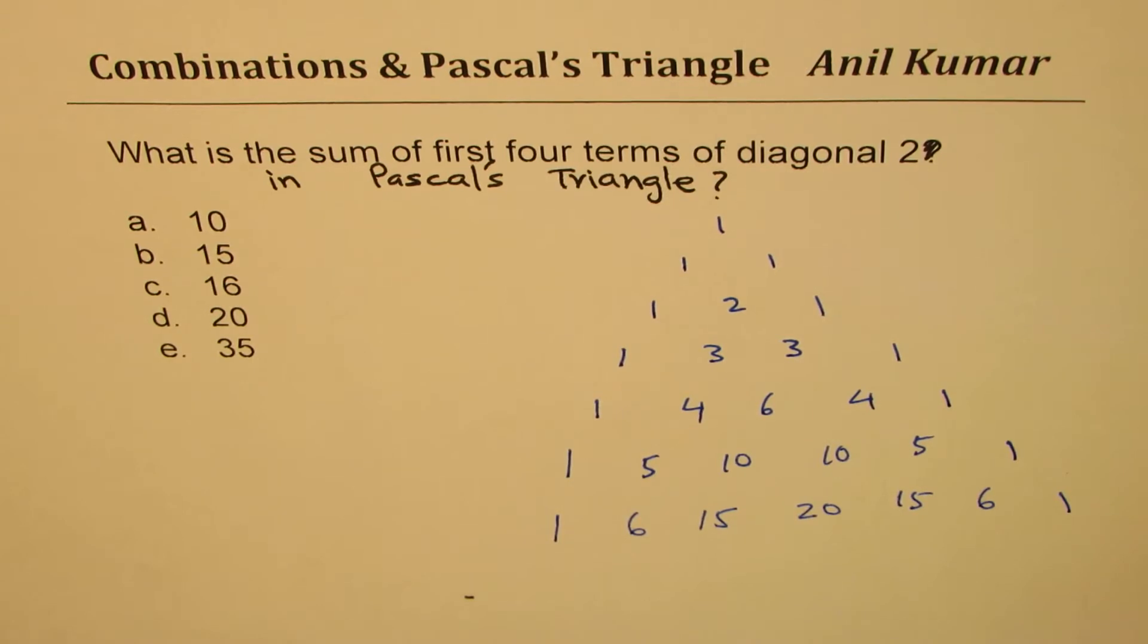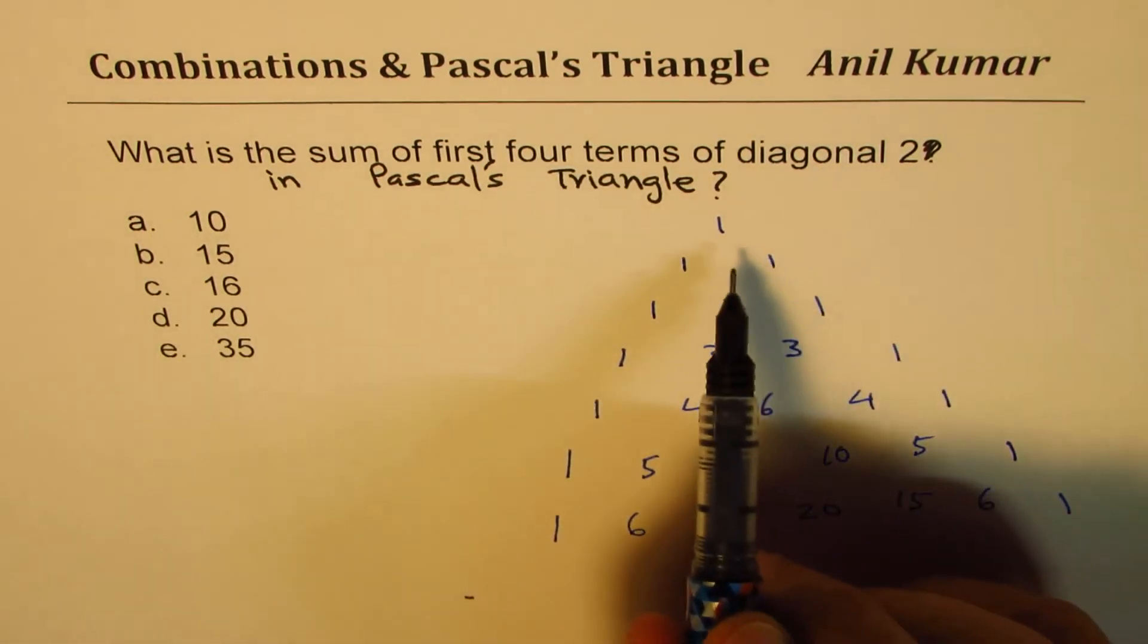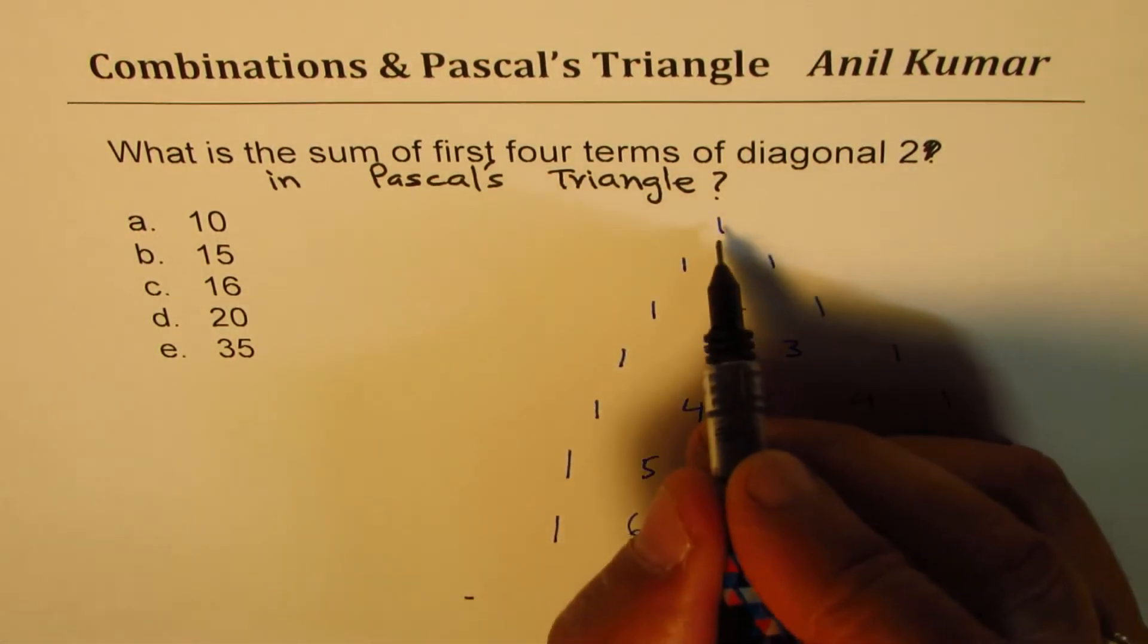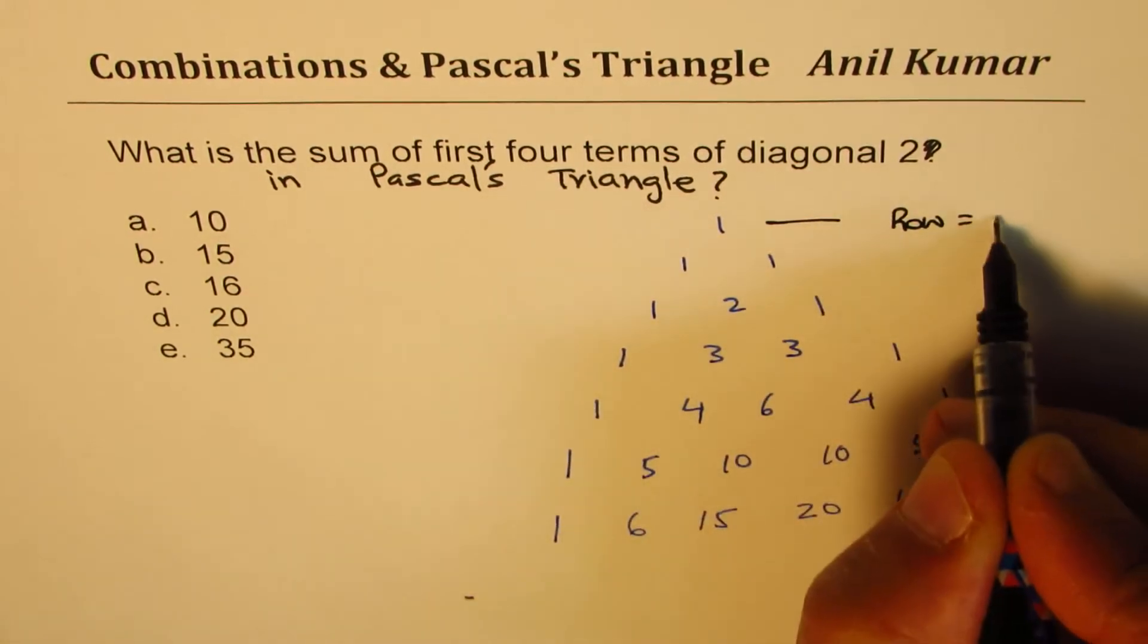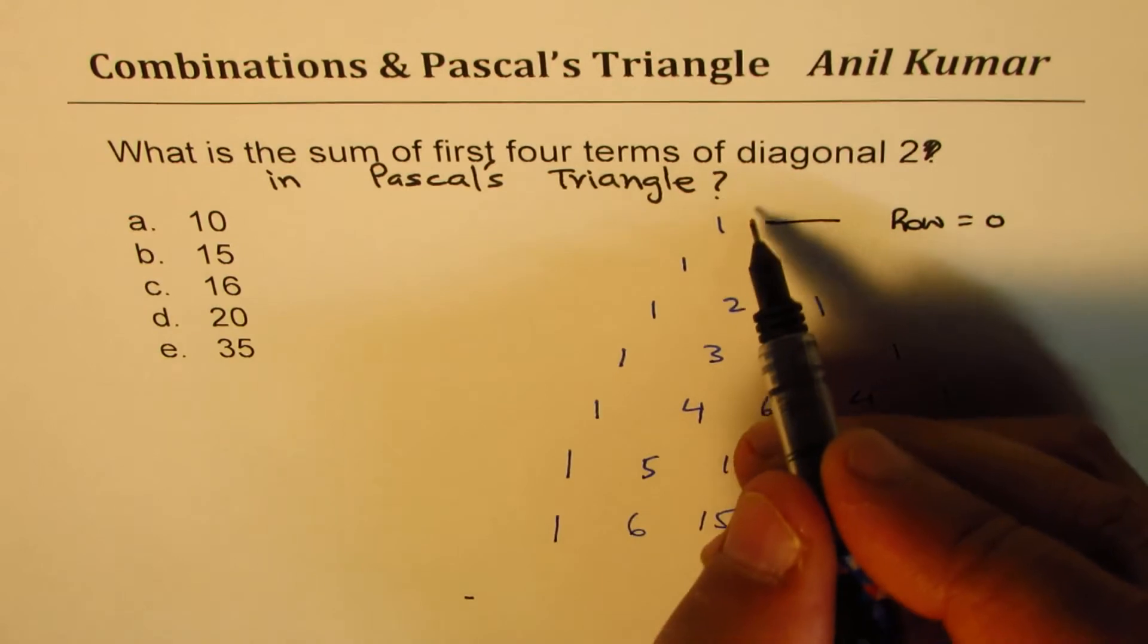Now what is the second diagonal? That is kind of important to understand. I found some students don't understand what each term here is. We definitely call about the row, right? So this is row number zero.